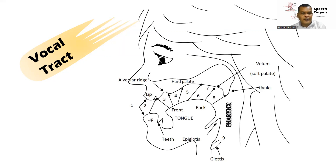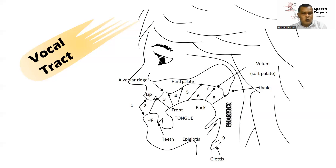Now let's talk about each of the organs of speech located in the vocal tract. The first one is our lip. Our lip is divided into two parts: the upper part and the lower part — we have upper lip and lower lip. Next, we have the tongue. Our tongue is divided into three parts. The first part is the tip of the tongue, located in the front part of the tongue.